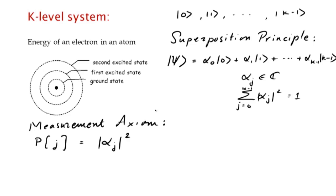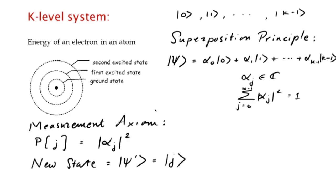Moreover, we also saw that a measurement disturbs the system, and the new state, which we'll denote by psi prime, is the j-th excited state if the measurement outcome was j.